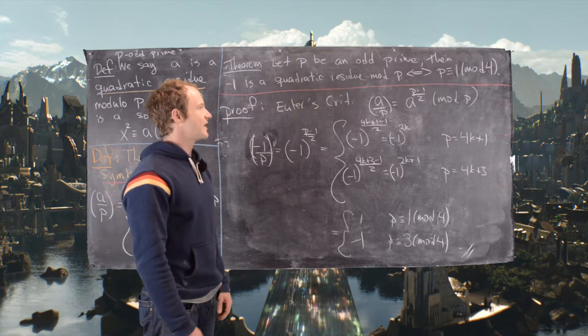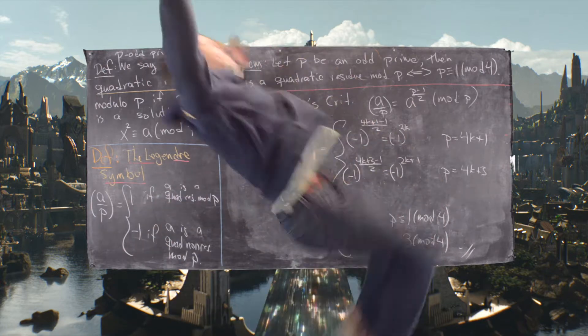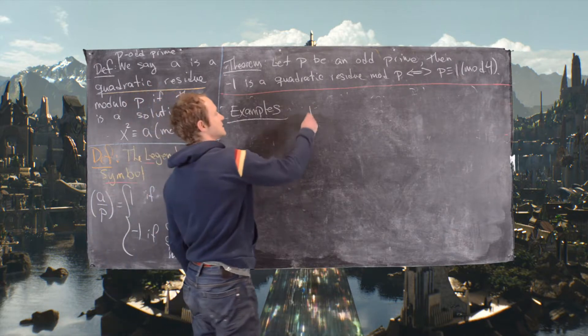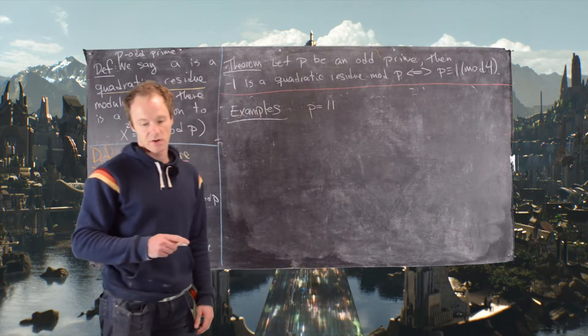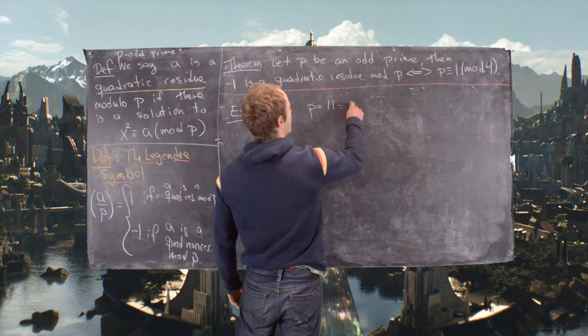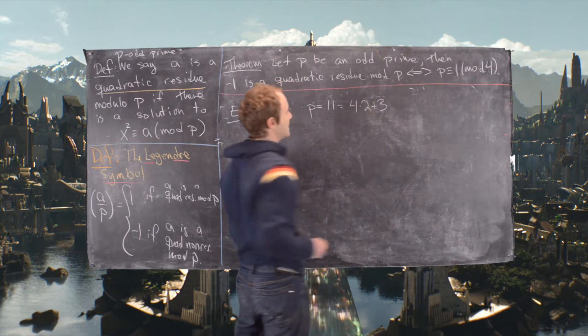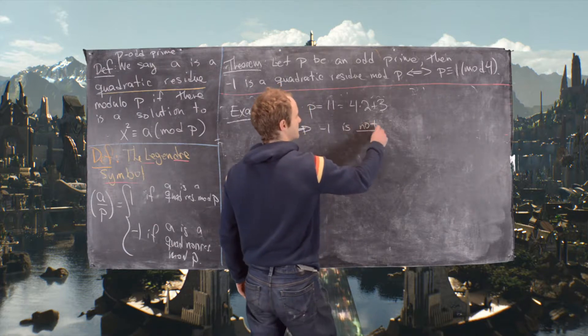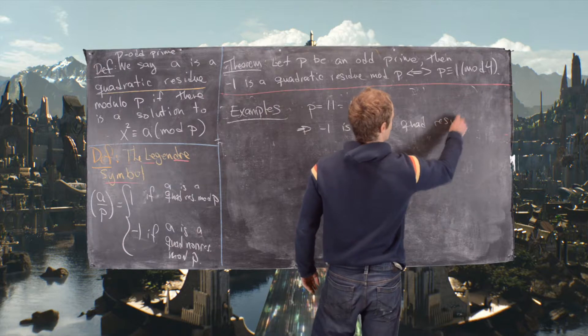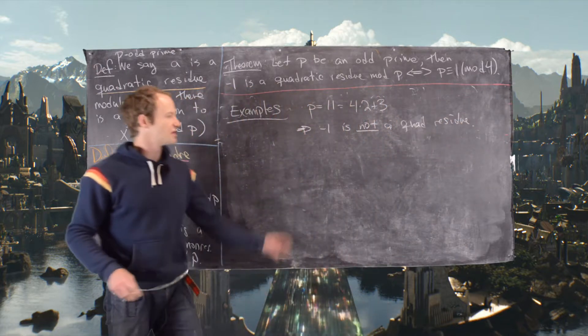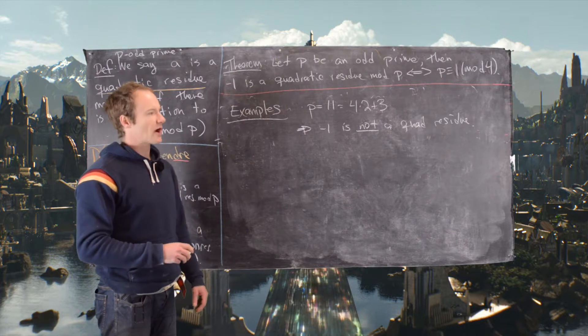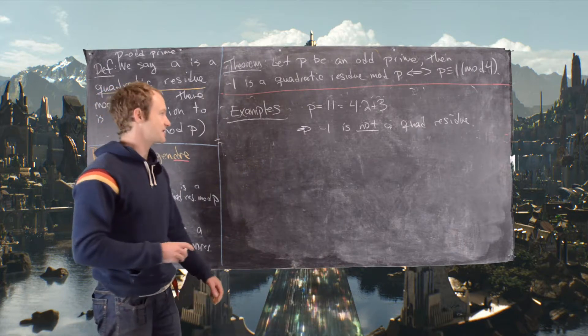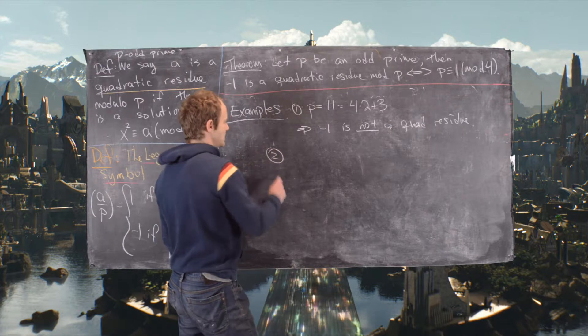Okay, so now we'll look at a couple examples. So first I want to look at a pretty simple example, so let's look at p equals 11. And so now 11, notice that is equal to 4 times 2 plus 3, which tells us by this theorem that negative 1 is not a quadratic residue mod 11. So I won't check that, but what you'd have to do is square all the numbers between 1 and 10 and you'll notice that none of them give you negative 1, which is 10 in this case.